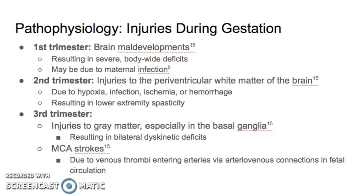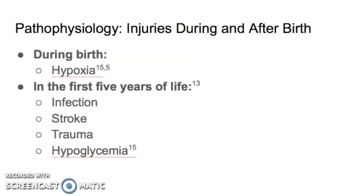Around 10% of cerebral palsy cases result from hypoxic injury during birth. Finally, around 10% of cerebral palsy cases result from injury occurring after birth. Most studies use a cutoff of around five years of age, though some use two years, and there is some disagreement in the literature with regards to the cutoff for brain injury to result in a cerebral palsy diagnosis. The source of a postnatal injury may be infection, stroke, trauma, or hypoglycemia.